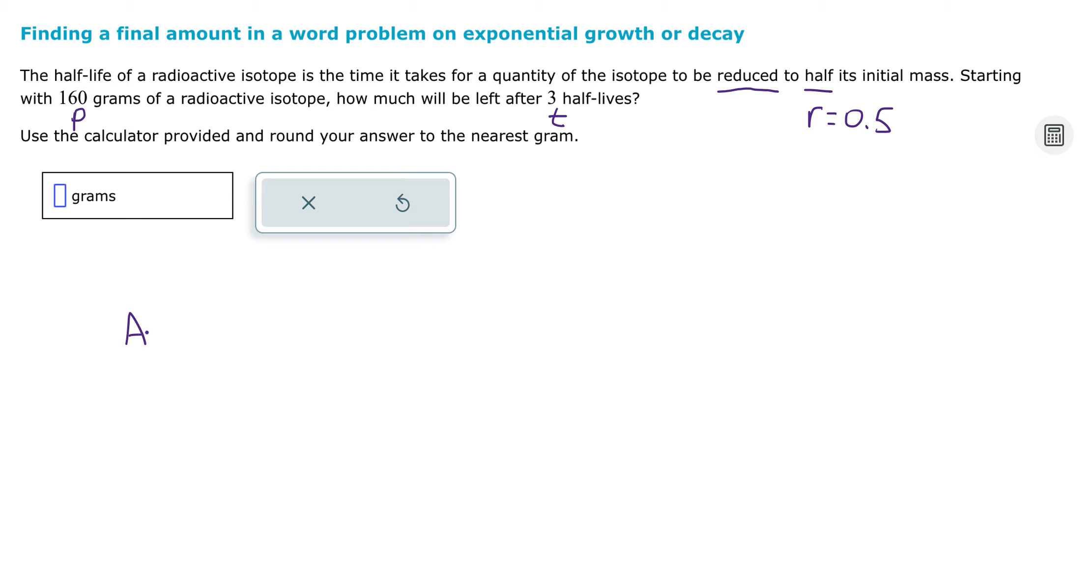So plugging into the formula here, we're going to have A equals, again I'll write the formula out. So that's going to be 160, 1 minus 0.5, again because it's decreasing, and then my T is going to be 3.